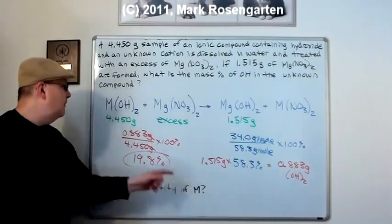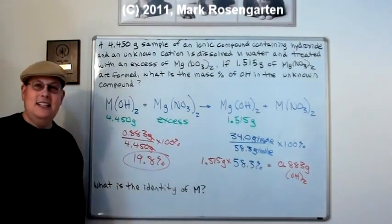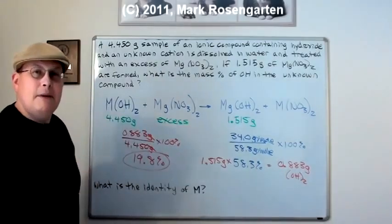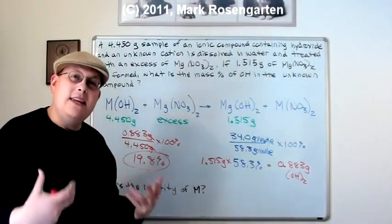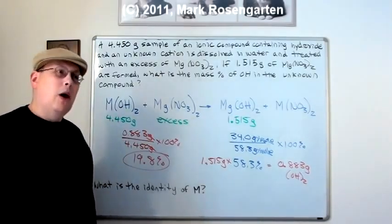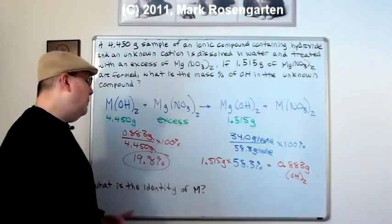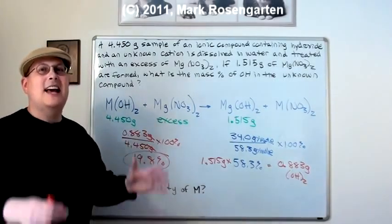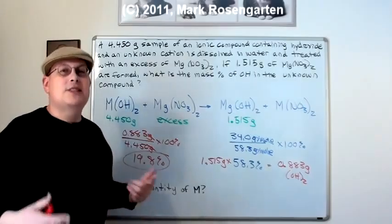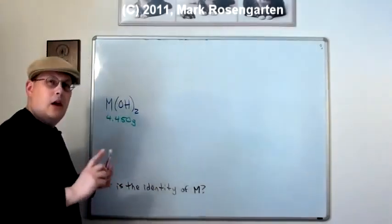Now to solve the second half of this problem, what is the identity of this metal M, we don't actually need that 19.8%. That might be what threw you off. You might say, okay, I got this answer in percent. Now how do I use that to solve the problem? Well, you don't. You actually, technically you could use it, but I'll show you a way around having to use the percent that's actually easier. It takes fewer steps than using the percent.